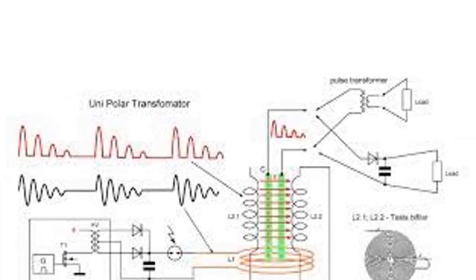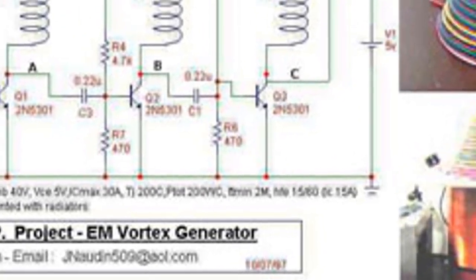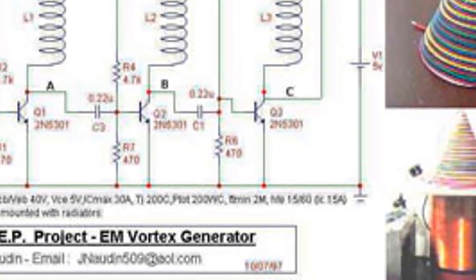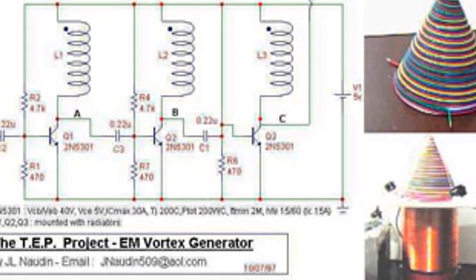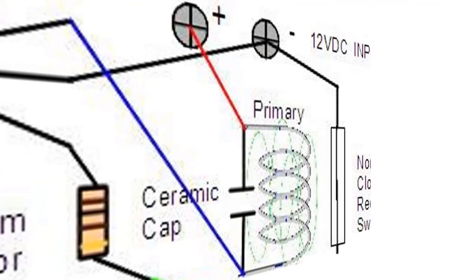The collapse field at high frequency is theorized by Nikola Tesla to generate radiant energy. The Tesla bifiler coil is a device designed to take advantage of this phenomena. When the ether field collapses, it releases energy in the form of radiant electricity.